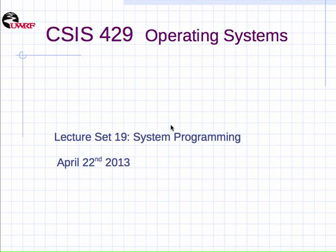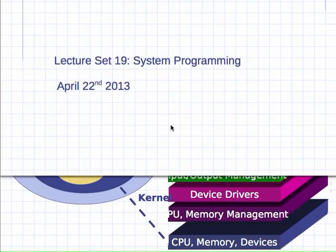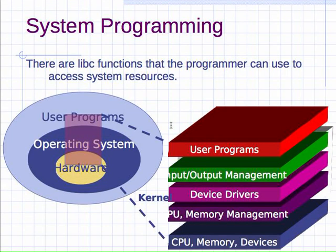In this set of lectures we will find out about system programming, and mainly about how to deal with the file system — files and directories. We need a picture of how there are layers of software between the hardware and the user. At the core of any system is the hardware, and then there are layers of operating system software around it. Above the operating system software are user programs, such as C programs we might write ourselves, or things like LS or shell scripts.